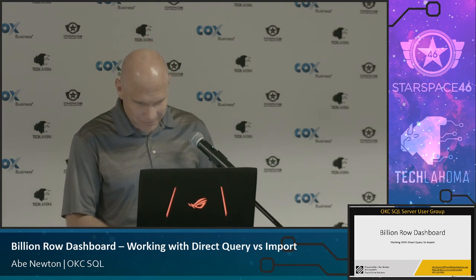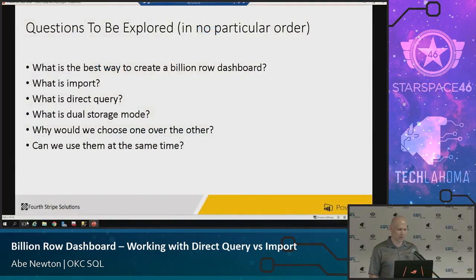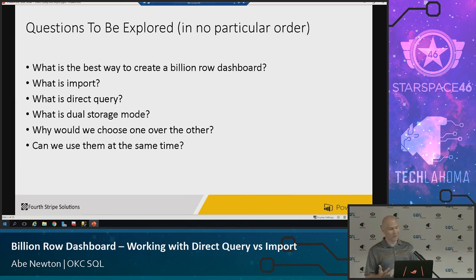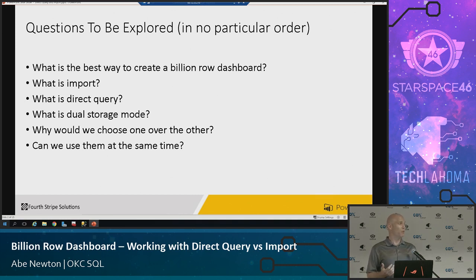Some of the questions we're going to explore: what is the best way to create a billion-row dashboard? What is import? What is direct query? What is dual storage mode? Why would we choose one over the other? Can we use them at the same time? And there's no particular order to these.